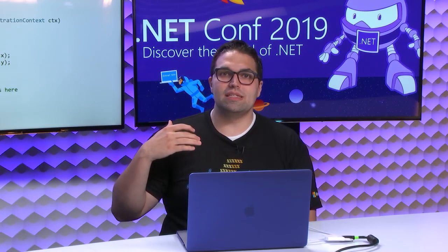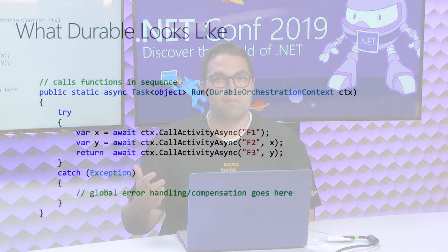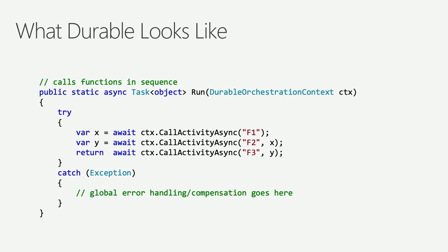What Durable Functions lets you do — it's an extension to Azure Functions, installable as a NuGet package — is write this in a codeful way, using code to describe more stateful and long-running workflows. Here's an example of an orchestration: the same logic as before, calling function one, then function two, then function three, described in code. Rather than managing queues or mentally mapping how things might happen, I've written this as a special type of function — a durable function. This entire orchestration might take 30 minutes or three days, and that's totally fine.